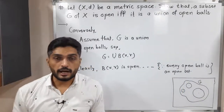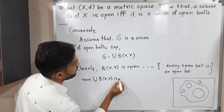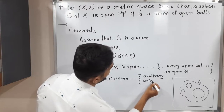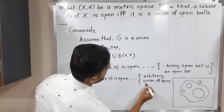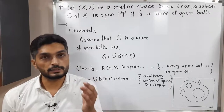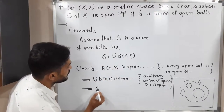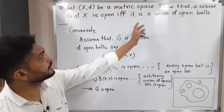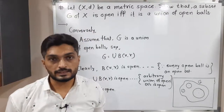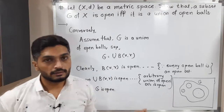We have studied one more result: the arbitrary union of open sets is open. Therefore, the union of B(x, R) is open, since each ball is an open set and the arbitrary union of open sets is open. But we have that the union of B(x, R) equals G. Therefore G is open. So we started with the assumption that G is a union of open balls, and we proved G is open. Hence we have proved both directions: if G is open then it is a union of open balls, and if it is a union of open balls then it is open.